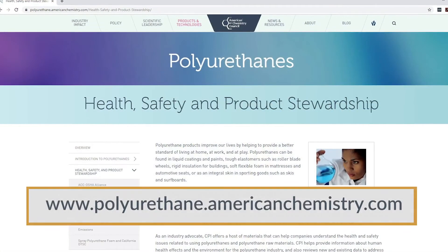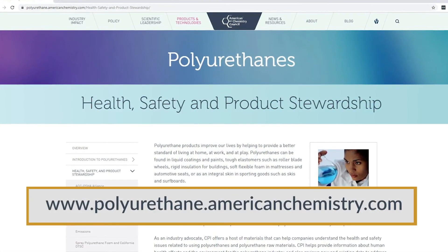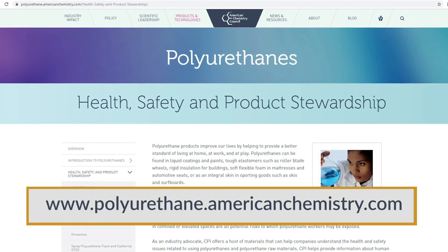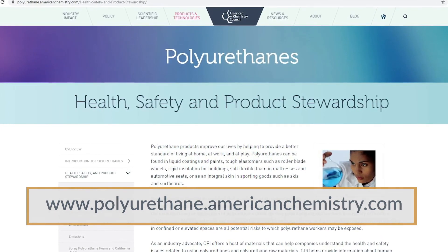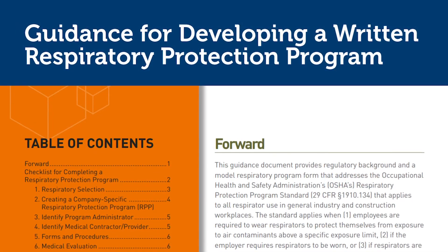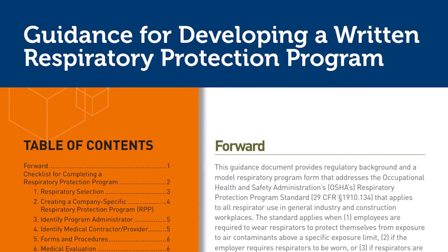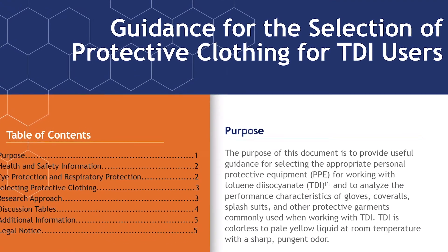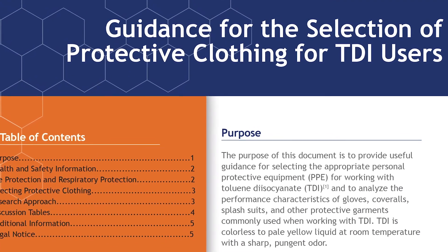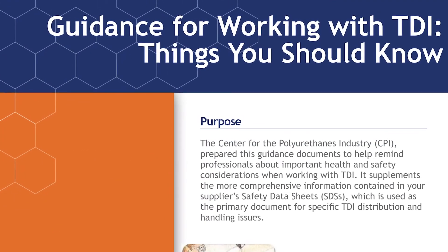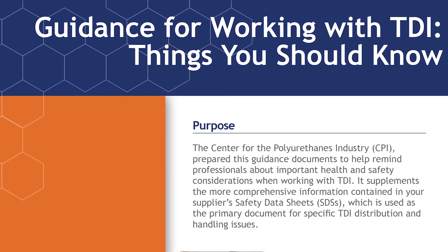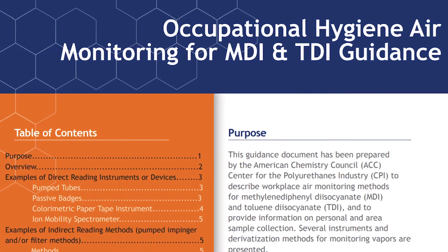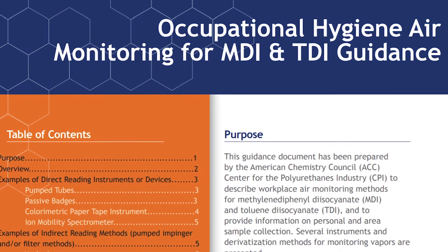For more information on the topics covered in this section, consult sources including the following literature developed by the Center for the Polyurethanes Industry: guidance for developing a written respiratory protection program; guidance for the selection of protective clothing for TDI users; guidance for working with TDI — Things You Should Know; and Occupational Hygiene Air Monitoring for MDI and TDI guidance.